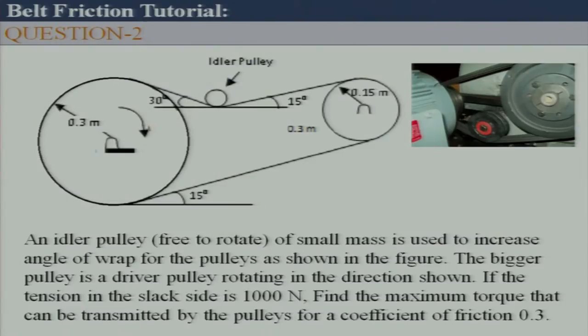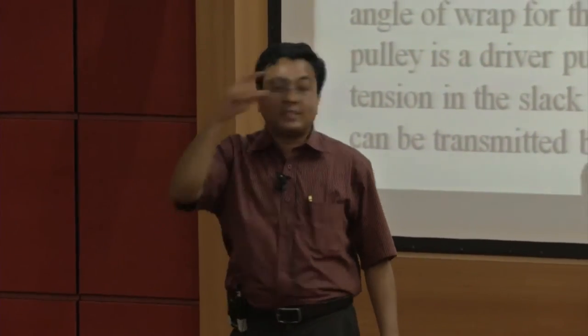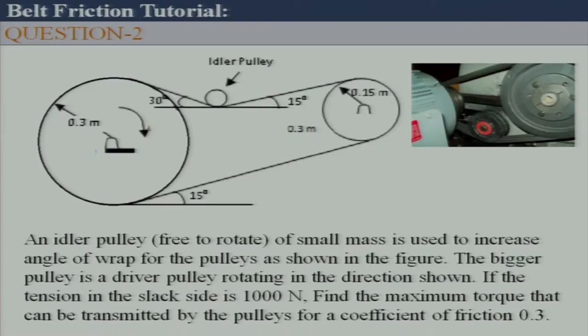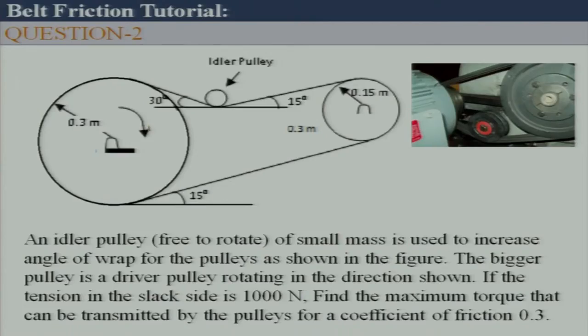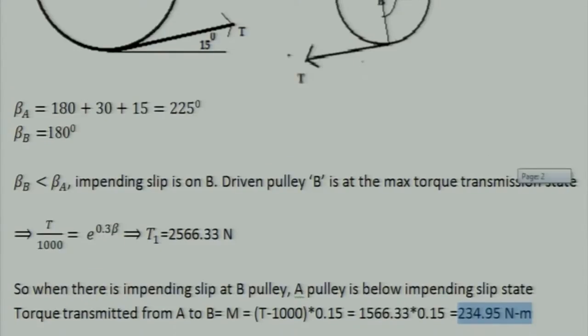The larger tension side is T and the slack side is 1000 N. Impending slip occurs on the smaller pulley B because it has the lesser contact angle. We apply: T / 1000 = e^(μs × βb), where βb is the contact angle on pulley B. From that we find the large tension side, then compute torque as (T − 1000) × r.